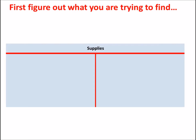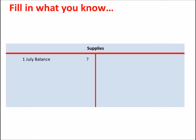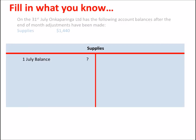Firstly, figure out what it is that the question is asking you for. In this case, what is the balance of supplies at the beginning of the month? Fill in what you already know given the information that you're given. Supplies has a balance of $1,440 at the end of the month. Supplies is an asset, so that will be a debit balance.